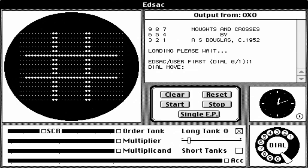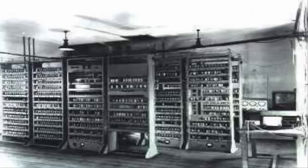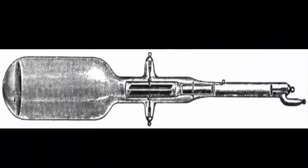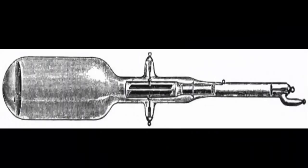OXO, or Noughts and Crosses, was the first graphics-based game, created by Alexander Shafto Douglas in 1952 on the EDSAC computer. It was played by one player. The player would decide who went first — the player or the computer — and what they would do. Using a rotary telephone dial to enter its moves, the EDSAC would display the game board on a 35 by 15 dot cathode ray tube. It was the first game to use graphics, which would soon influence a game called Tennis for Two.